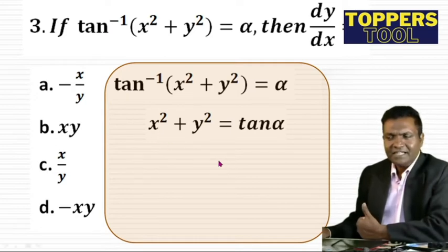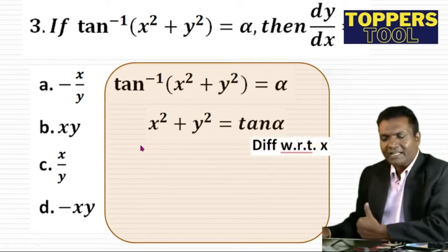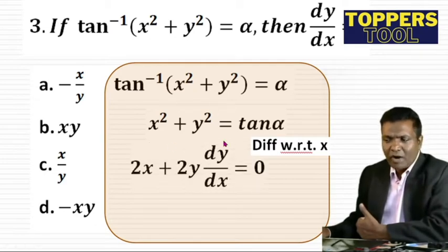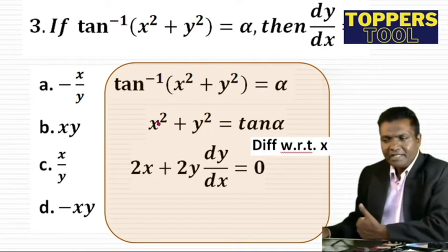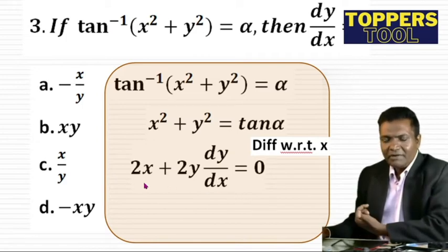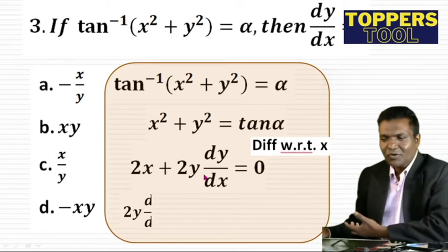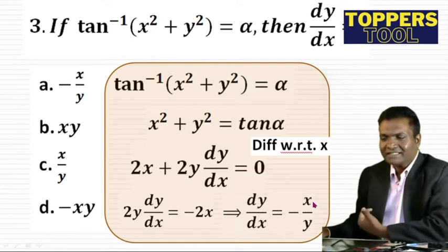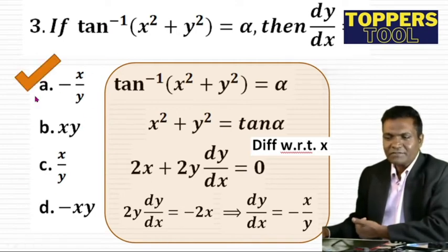Differentiating x² + y² = tan α with respect to x: the derivative of x² is 2x, and the derivative of y² is 2y·(dy/dx). Since tan α is a constant, its derivative is 0. So 2x + 2y·(dy/dx) = 0, giving 2y·(dy/dx) = -2x. Cancelling 2, dy/dx = -x/y. So option one is the correct answer.